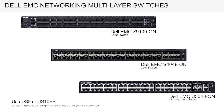In this deployment, four S4048ON switches are used as leaf switches and two Z9100ON switches are used as spine switches. One S3048ON is used as a management switch for out-of-band management of switches, servers and storage. The spine and leaf switches on RAC1 run OS10, whereas S4048ON on RAC2 runs OS9. S3048ON runs OS9 as well.